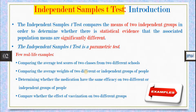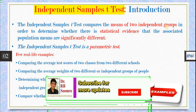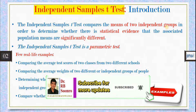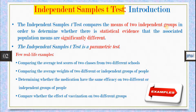The independent sample t-test compares the means of two independent groups. Basically, what this test does is compare whether there is statistical evidence that the associated populations are significantly different — in other words, whether the means of two independent groups are significantly different from each other or not. This test is classified as a parametric test.